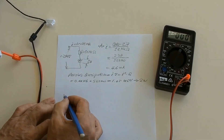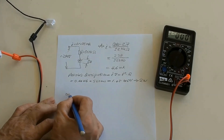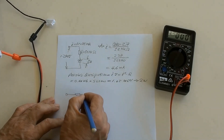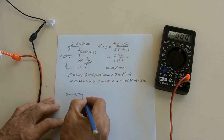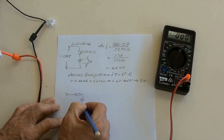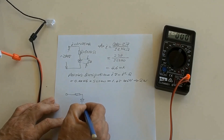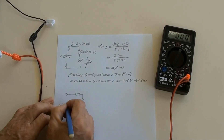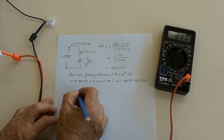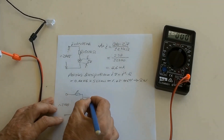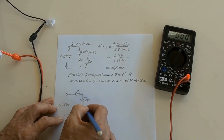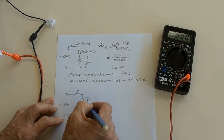There is another LED circuit which adds a diode — type 1N4007 — between the resistor and the LED in the circuit. The voltage across the diode is 0.7 volts, and the LED is 2 volts.